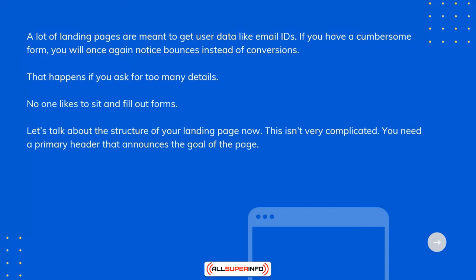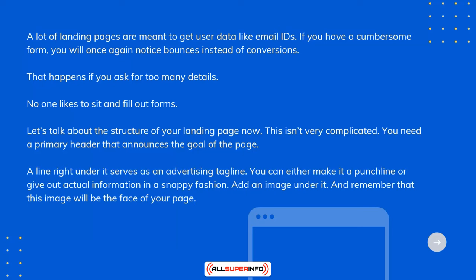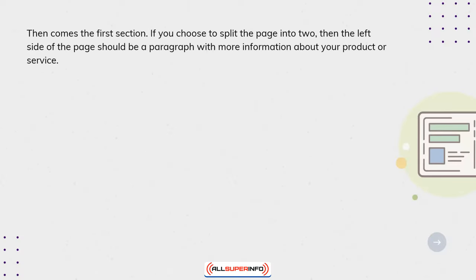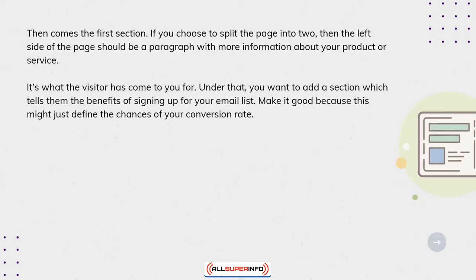Let's talk about the structure of your landing page now. This isn't very complicated. You need a primary header that announces the goal of the page. A line right under it serves as an advertising tagline. You can either make it a punchline or give out actual information in a snappy fashion. Add an image under it, and remember that this image will be the face of your page. Then comes the first section — if you choose to split the page into two, the left side of the page should be a paragraph with more information about your product or service. It's what the visitor has come to you for.